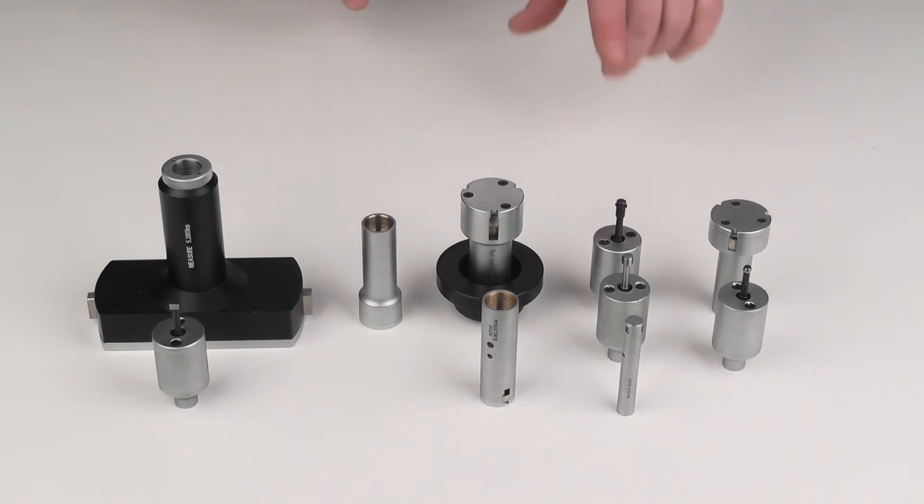So all of these except for the thread measuring heads can be set on a standard cylindrical master ring. The thread heads would have to have a threaded master ring with the nominal pitch diameter marked.